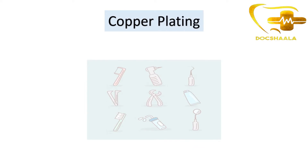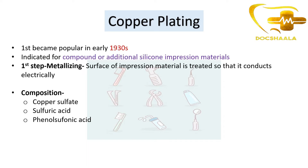Coming to copper plating: copper plating first became popular in the early 1930s. It is indicated for compound or additional silicone impression materials. When we are using these two impression materials, we perform copper plating.